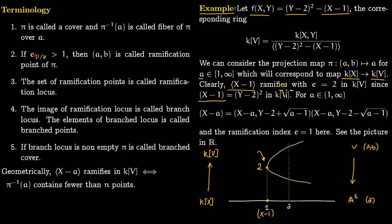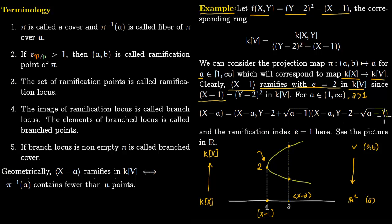So (x−1) ramifies with e=2 in kV. For a>1, the ideal (x−a) factorizes into two distinct parts — corresponding to two distinct points — with ramification index 1 each. These two ideals correspond to the two distinct points on the parabola above a, so there is no ramification for a>1.